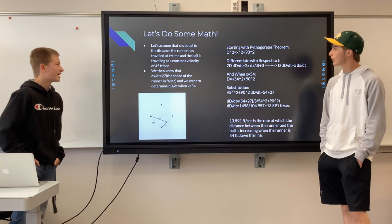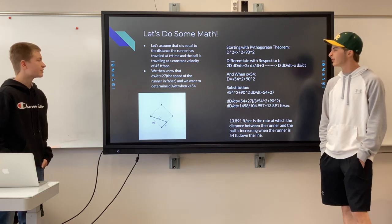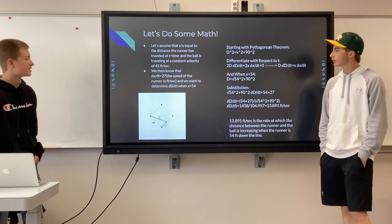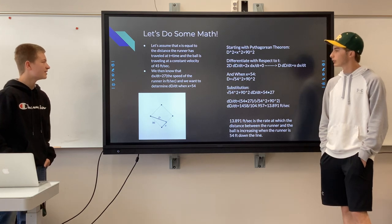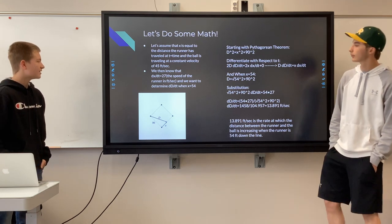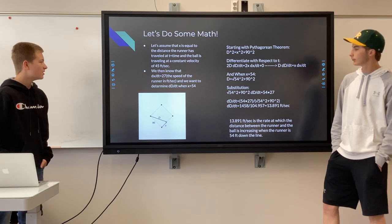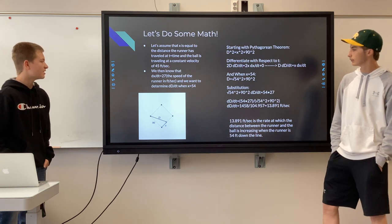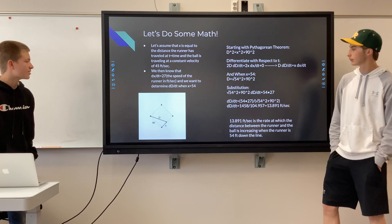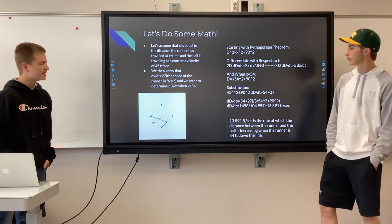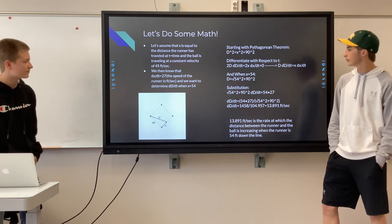We assume x is equal to the distance the runner has traveled at time t, and the ball is traveling at a constant velocity of 45 feet per second. We know that dx/dt equals 27, which is the speed of the runner in feet per second, and we want to determine dd/dt when x equals 54.